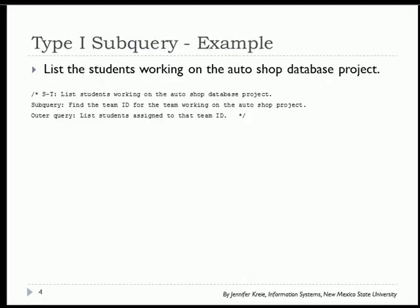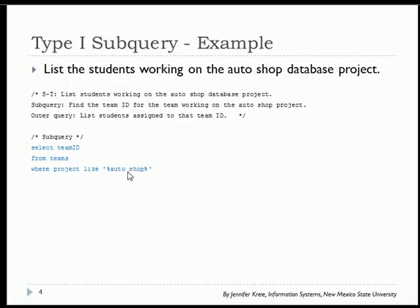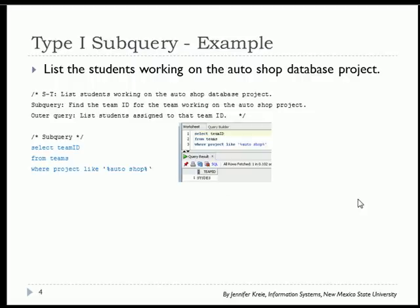Let's look at a simple example. We're going to get a list of students working on the Autoshop database project, working with the student teams database. The subquery will find the team ID for the team working on the Autoshop project. We use 'SELECT team_ID FROM teams WHERE project LIKE' with a wildcard on either side since we're not exactly sure of the project name. Running that, we find the system designers team is the one working on that project.